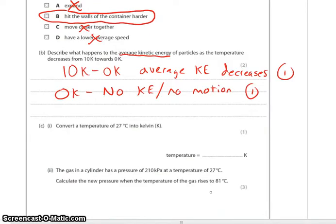Next one. You're going to convert a temperature of 27 degrees Celsius into Kelvin. Well, you're going to add 273. And that's 300 Kelvin.